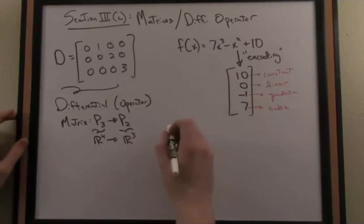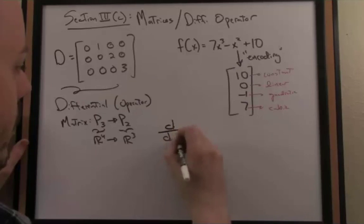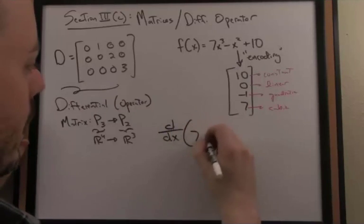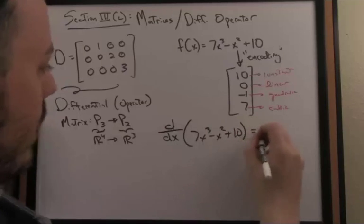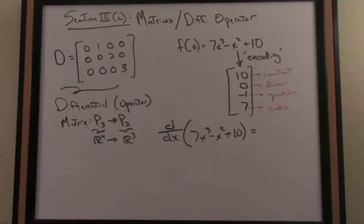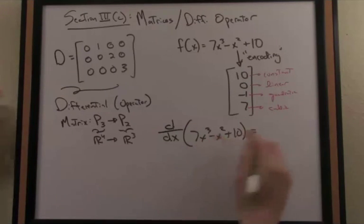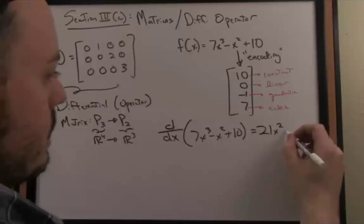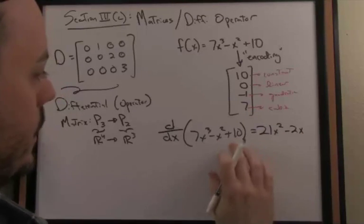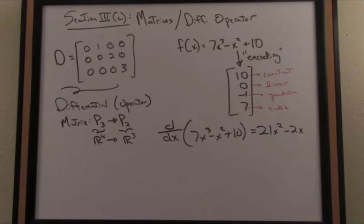So, just using the rules of differentiation from calculus, if I take the derivative of 7x³ - x² + 10, again, it's a linear operator, so I take the derivative of each term separately and apply the power rule from calculus. The derivative of the first term results in 21x². Derivative of the second term is -2x by the power rule, and the derivative of a constant, 10 in this case, is zero.